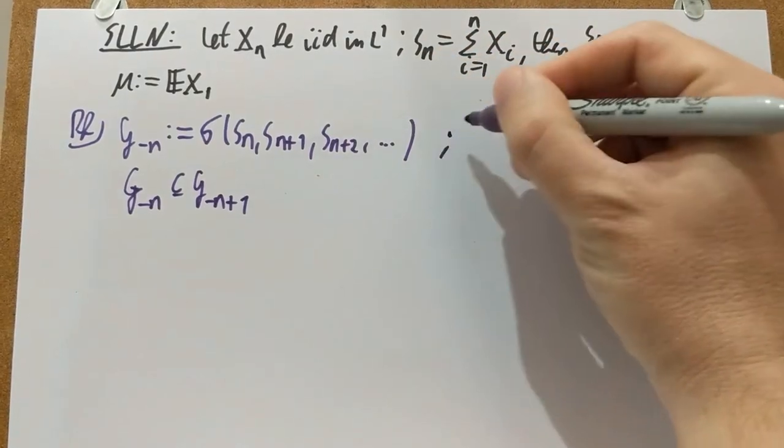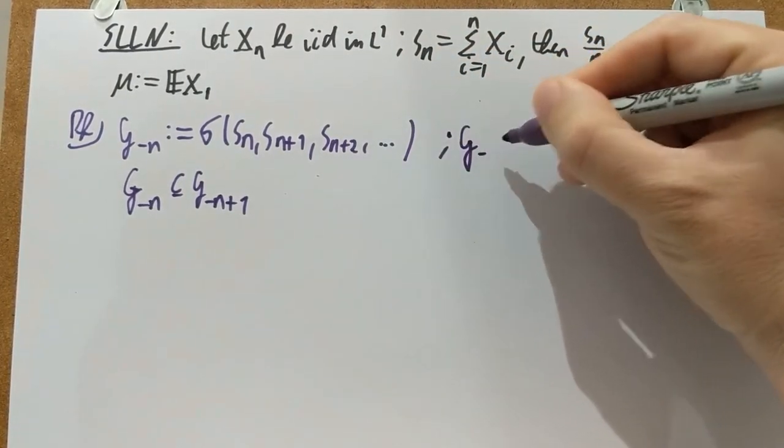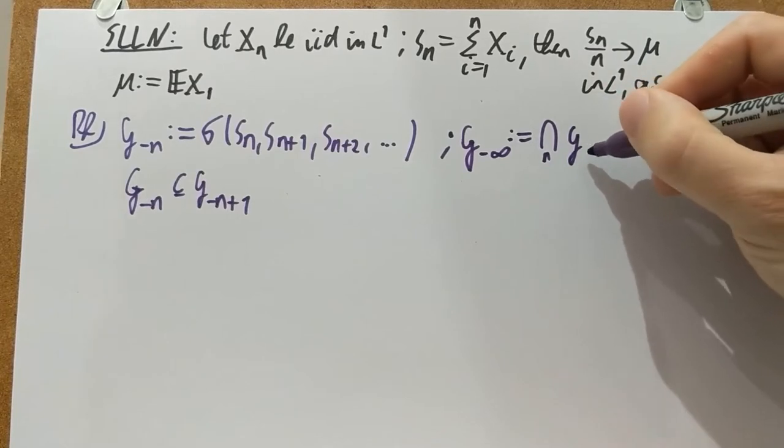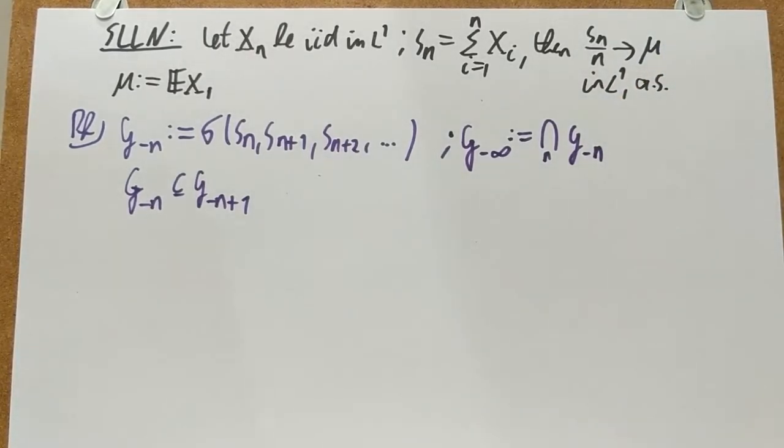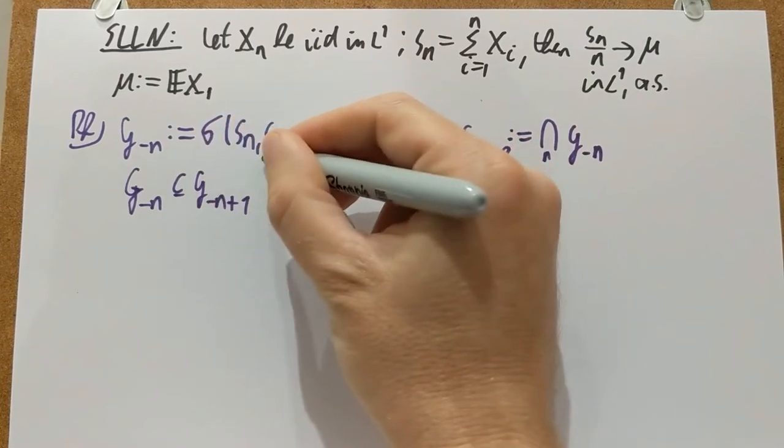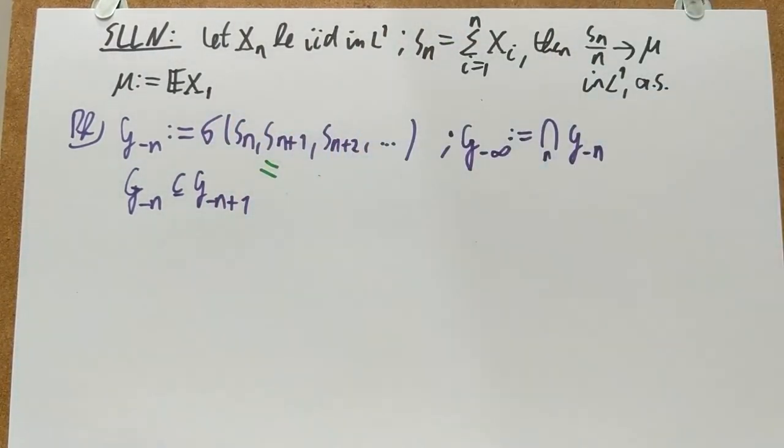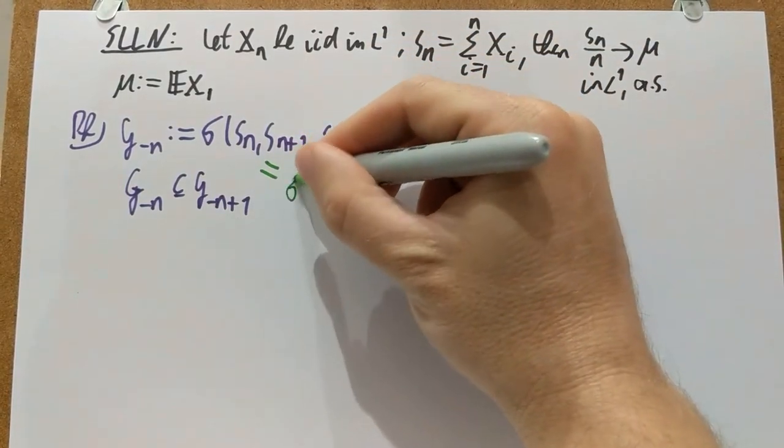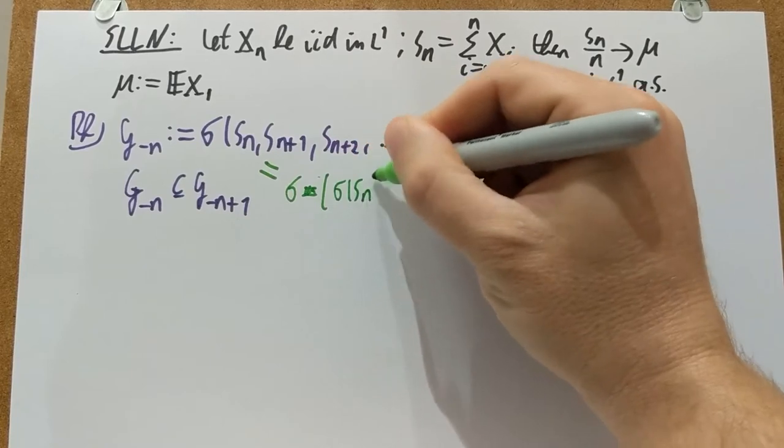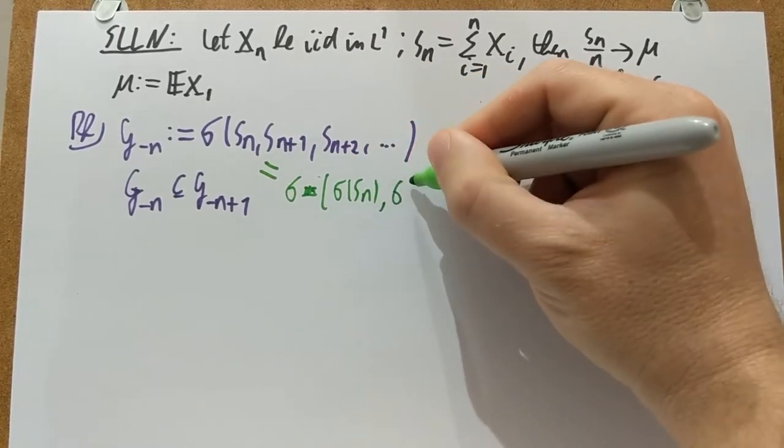And also define, as before for Levy's downward theorem, G_{-∞} as the intersection of these. So intersection of G_{-N}. Okay, so once we have these definitions, then let's do a few simple observations. The first observation I want to make is that the sigma algebra generated by S_N and all the subsequent S_{N+1}, S_{N+2}, and so on. You can also think about that, or you can also just say that this is the sigma algebra generated by actually two sigma algebras. One generated by S_N itself, and one generated by the rest.